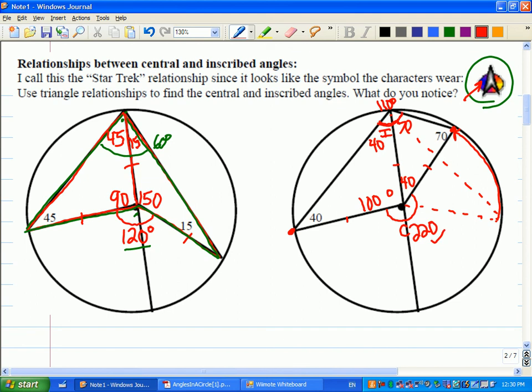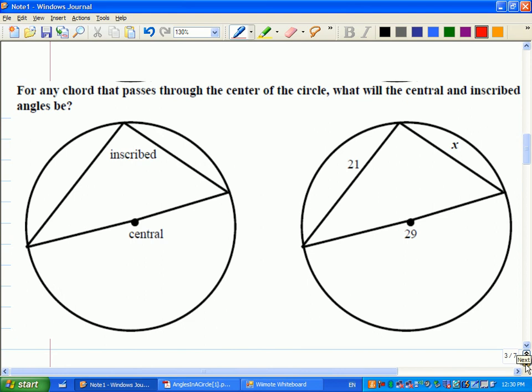We can just use this property now to help us solve some problems. For any chord that passes through the center of the circle, that means the central is equal to twice the inscribed, or the inscribed is half the central.